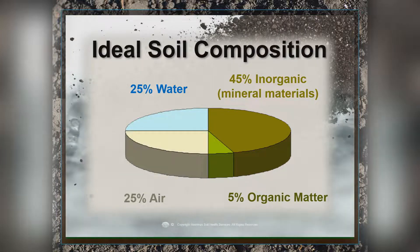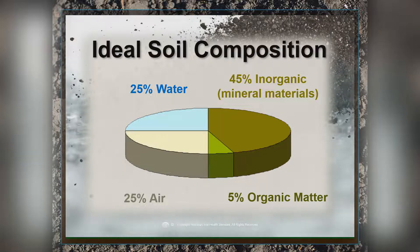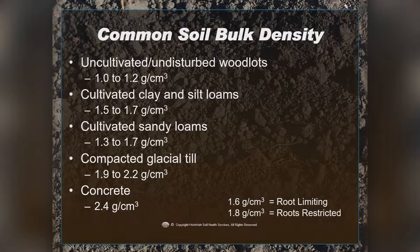When it rains, that pore space can be fully saturated, or if you've got a really dry summer you may have less air in your soil. Bulk density is just the weight in grams of your soil divided by the volume, measured in centimeters cubed — so it's mass or weight divided by volume.